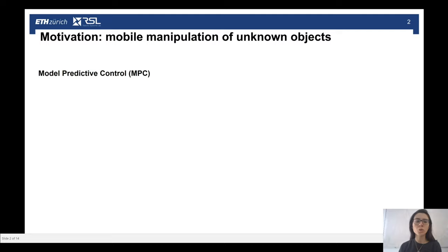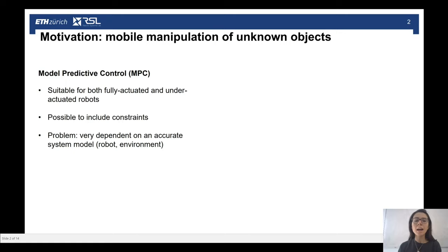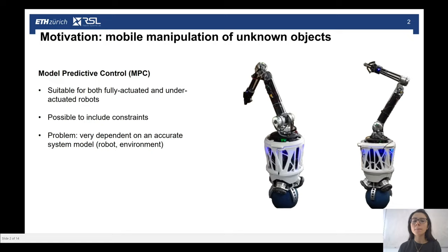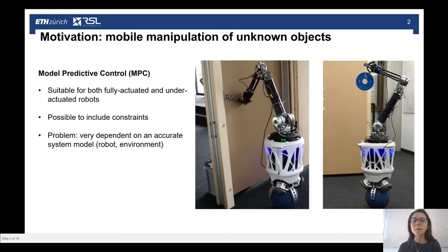In general, an effective approach to control under-actuated systems is provided by Model Predictive Control or MPC, which allows to solve an optimization problem online at fast accurate rates. MPC is suitable to control both fully-actuated and under-actuated robots and gives the possibility to include safety constraints. However, its problem is that it is very dependent on the availability of an accurate system model. This includes a model of the robot, which in this work is supposed to be provided by accurate CAD data, and a model of the environment, which may include different doors that the robot may be required to open or different objects that the robot may be required to carry.